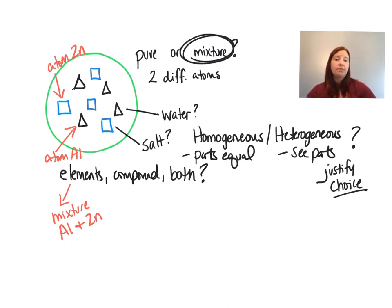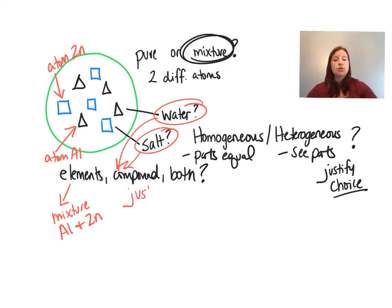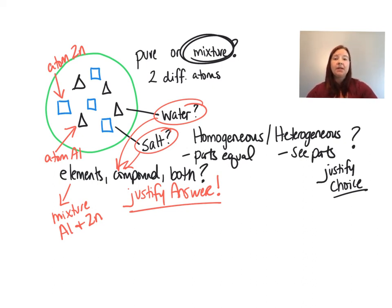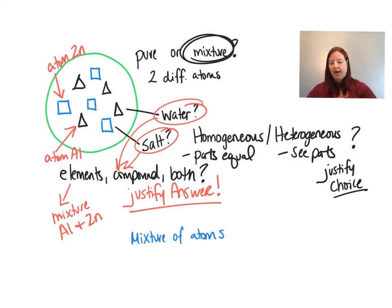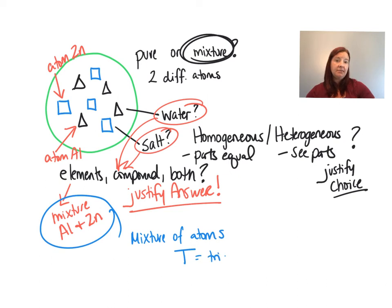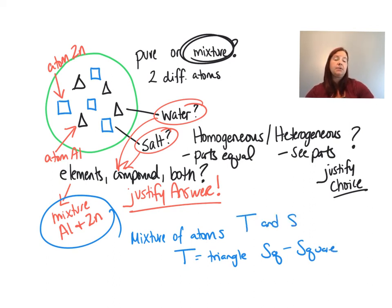If you were to say the triangles represent water, you could say that's a mixture including a compound, since water is a compound. Again, if this were an open-ended question, you could justify your answer with an explanation. Each symbol typically represents an individual atom, so I would call this a mixture of atoms. To symbolize these particles, I'd write T for triangles and SQ for squares with 'and' in between — T and SQ — to show they're not bonded together, that this is a mixture of those different materials.